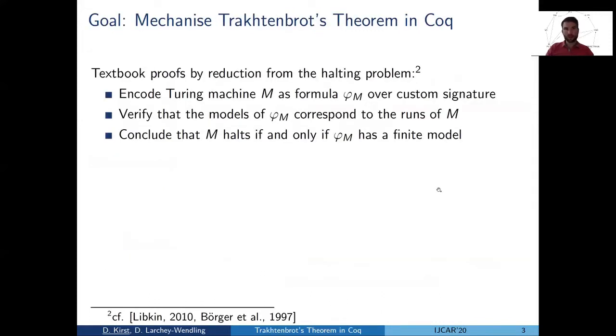Our goal is to mechanize this theorem in Coq. What one does is look at textbook proofs and isolate a good proof strategy. We have looked at textbooks and here the proof strategy normally looks as follows. One starts with Turing machines, looks at encodings of Turing machines as first order formulas over a custom signature introducing a lot of symbols.